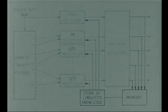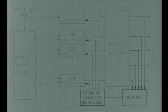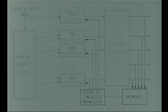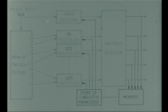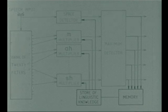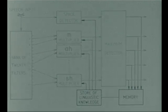In this way, the output of each multiplying circuit is the product of three factors: the two filter outputs and the probability voltage. The maximum detector selects the biggest of these products and so determines the symbol produced by the typewriter. When a sound has been recognized, the machine has to remember what the sound was in order to apply the right set of probability voltages for the next sound, and so the machine contains a memory circuit which controls the linguistic store.